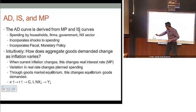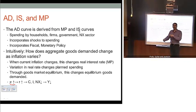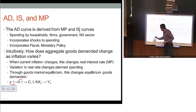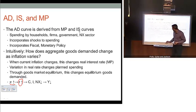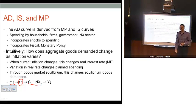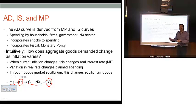The mechanism works through the fact that when inflation increases, the Fed automatically responds by increasing its policy rate — increasing the real interest rate. That has impacts on households, firms, and net exports' planned spending, and that translates through to changes in the aggregate amount of output demanded as a result.